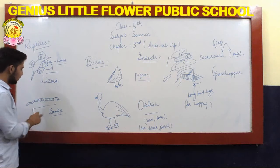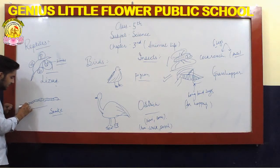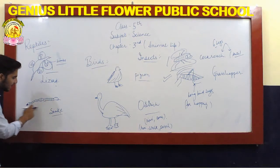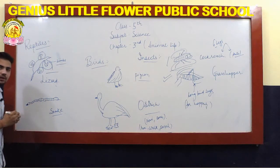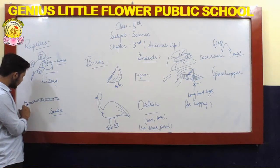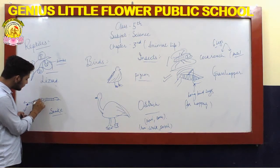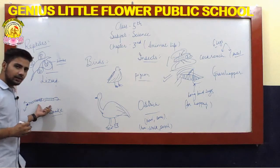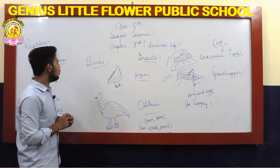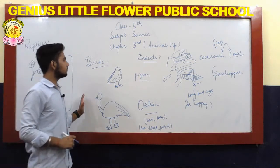Since snakes have no limbs, their motion uses plates. Snakes have many plates arranged on their body — as shown in the diagram — which help them move on rough surfaces. These plates are connected to the ribs, so the ribs can act like legs and the plates can act like feet for locomotion.